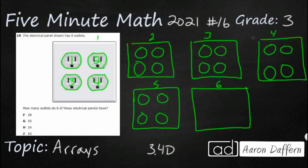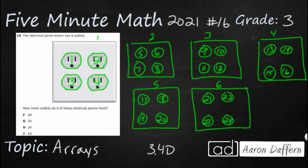I've got four outlets on each of these electrical panels and six total electrical panels. The question is: how many outlets do six of these electrical panels have? Let's count: 1, 2, 3, 4, 5, 6, 7, 8, 9, 10, 11, 12, 13, 14, 15, 16, 17, 18, 19, 20, 21, 22 — I bet many of you guessed it already — 23, 24.